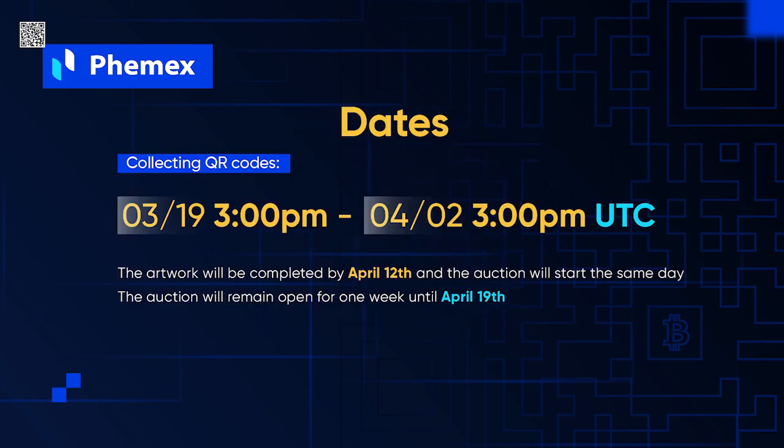Here's a quick review of the dates. We'll be collecting QR codes from March 19th at 3pm UTC — that's already happening — and this ends on April 2nd at 3pm UTC. The artwork will be completed by April 12th, and the auction will start that same day. The auction stays open for a week, closing on April 19th with the final bid.